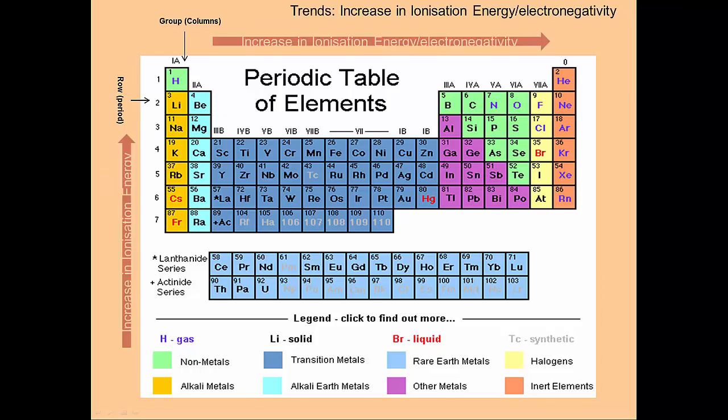Ionization energy is the energy required to ionize an atom — to remove an electron. It increases as we move from left to right across the periodic table. It's quite easy to remove an electron from lithium, sodium, or potassium, but much harder to remove one from fluorine, chlorine, or bromine. Ionization energy also increases as we go from bottom to top, because electrons further from the nucleus are easier to remove.